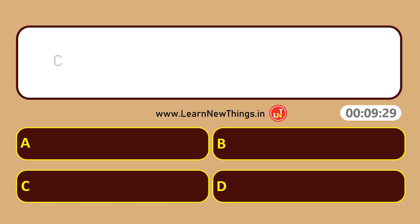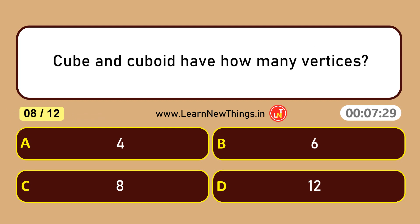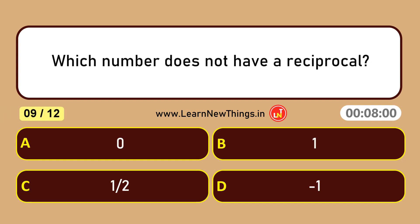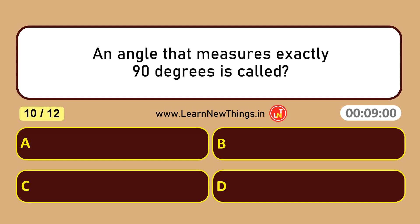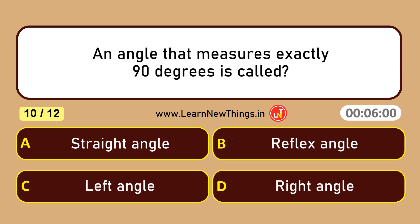Cube and cuboid have how many vertices? 8. Which number does not have a reciprocal? 0. An angle that measures exactly 90 degrees is called a right angle.